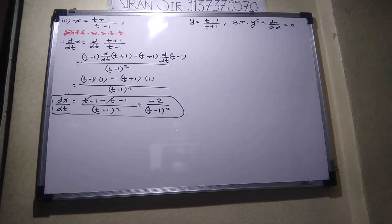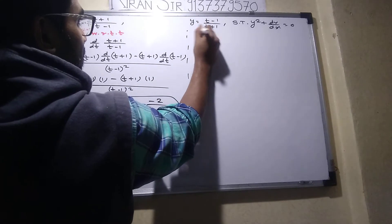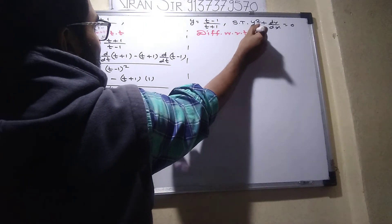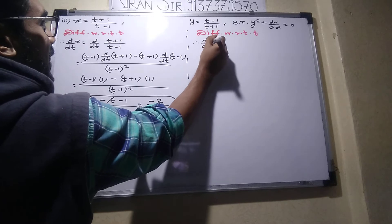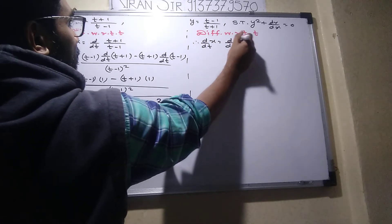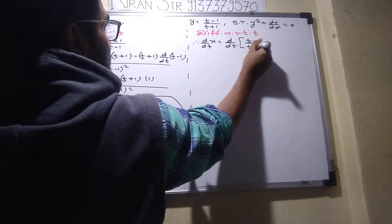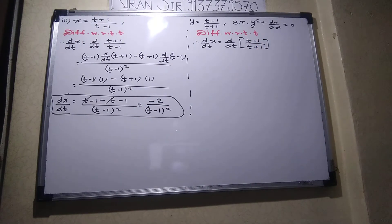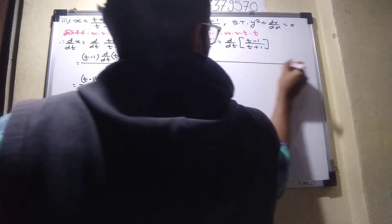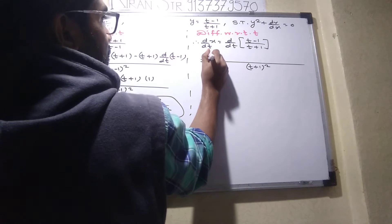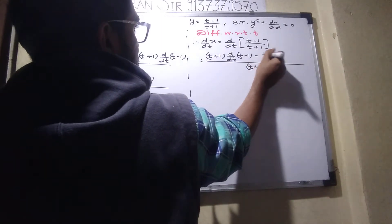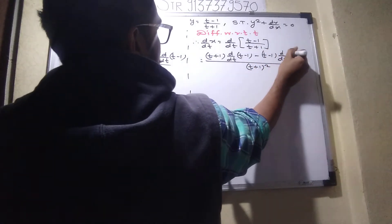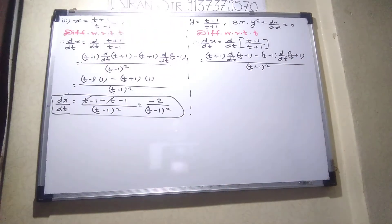We have to differentiate the right hand side already. So we have d by dt of y, d by dt of t minus 1 upon t plus 1. We have d by dt of t minus 1 minus t minus 1, d by dt of t plus 1.